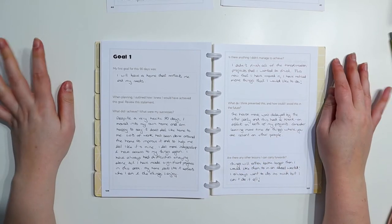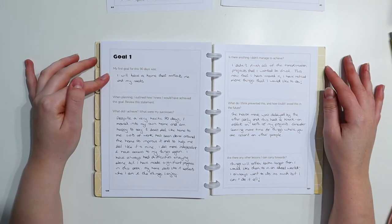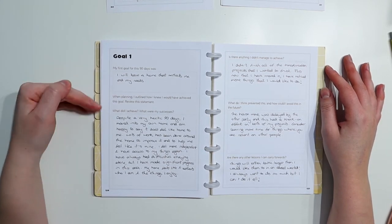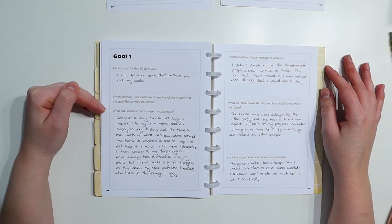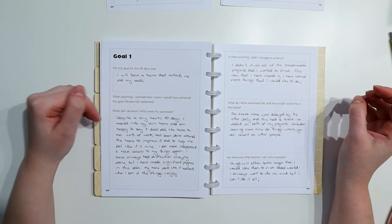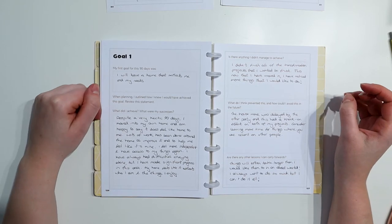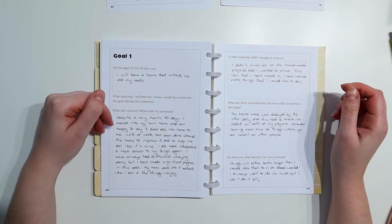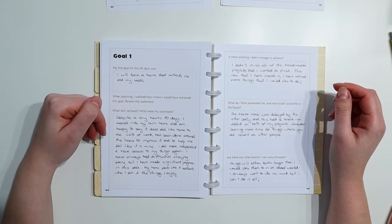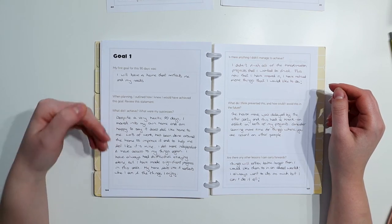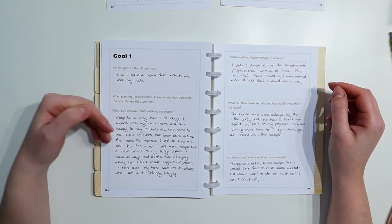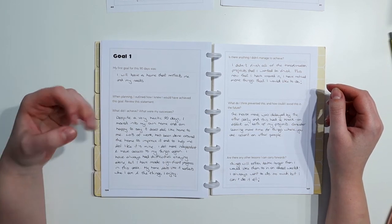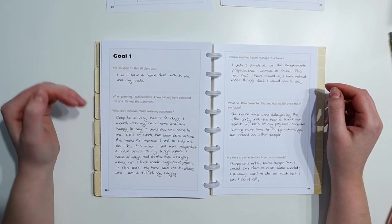Okay, so my first goal spread I filled in. So my first goal for this 90 days was I will have my own home that reflects me and my needs. So what did I achieve and what were my successes? I wrote, despite a very hectic 90 days, I moved into my own home and I'm happy to say that it does feel like home to me. Lots of work has been done around the home to improve it and to help me feel like it's mine. I feel more independent and have access to my things again. I have always had difficulty staying alone, but I have made significant progress in this area. And my home feels like it reflects who I am and the things I enjoy.